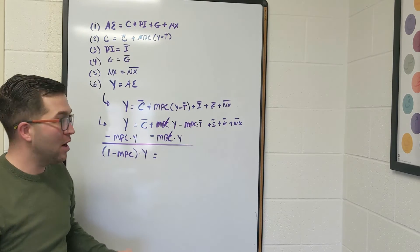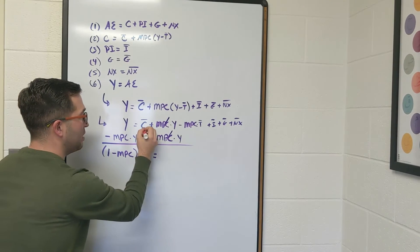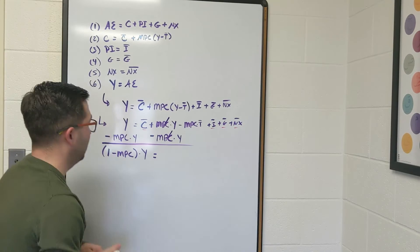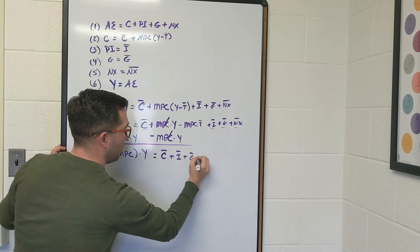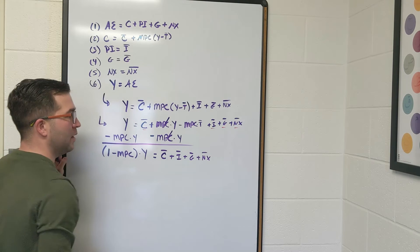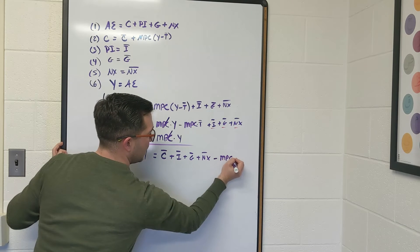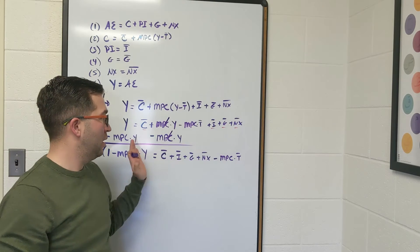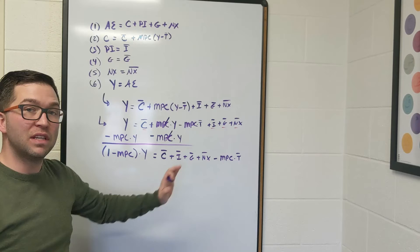And on the right-hand side here, I'm going to put all of the autonomous spending together. So let's go C̄ plus Ī plus Ḡ plus NX̄. And then I'm going to put the minus MPC times T̄. So we're just going to use the commutative property here in algebra to say that we can move this stuff back and forth.